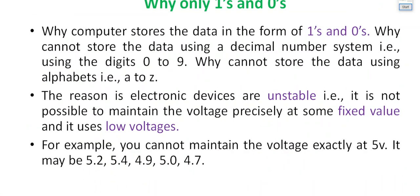You might have heard that a computer uses only ones and zeros, or that it operates using the binary number system. Why only binary? The main reason is that computers are unstable devices in the sense that you cannot precisely keep the voltage at a fixed value. If you try to supply 5 volts, you cannot exactly supply 5 volts — it may vary to 5.2, 5.4, or 4.9 volts. Because the voltage varies, you cannot have many distinct voltage levels.